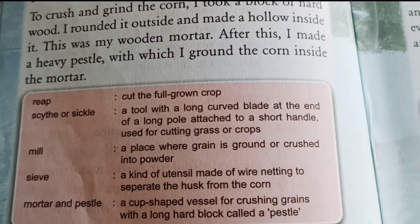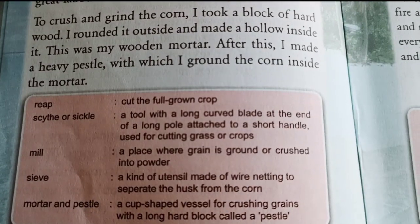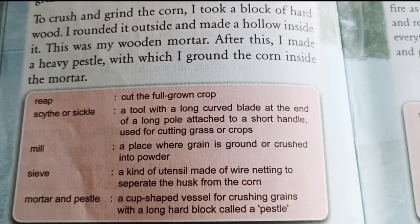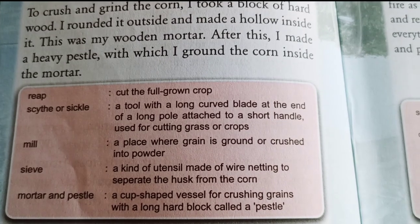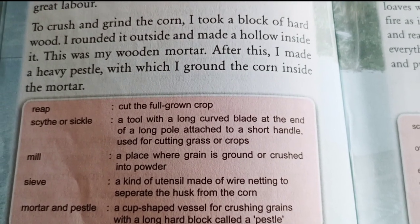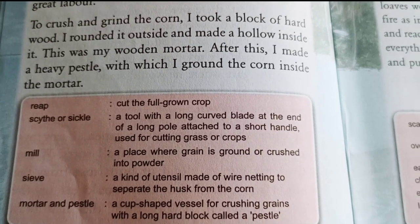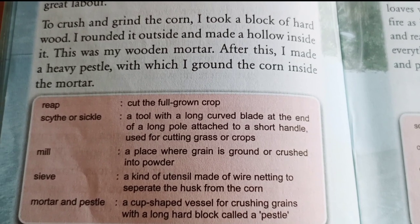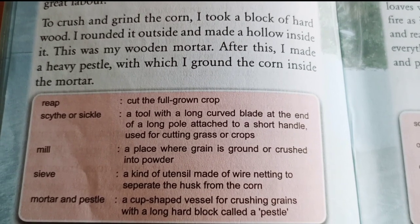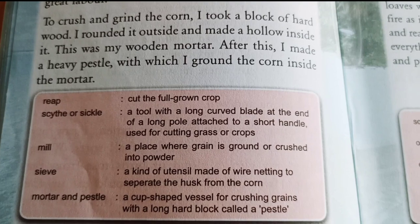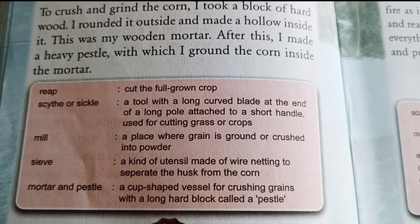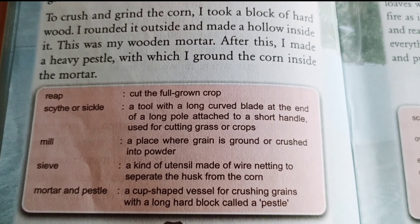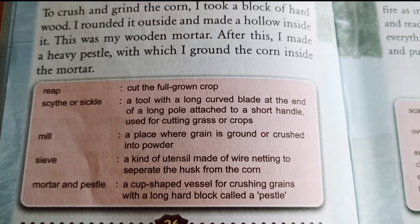Reap: cut the full-grown crop. Scythe or sickle: a tool with a long curved blade at the end of a long pole attached to a short handle, used for cutting grass or crops. Mill: a place where grain is ground or crushed into powder.